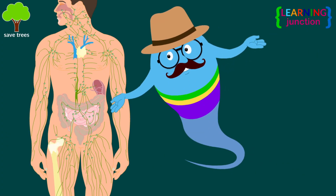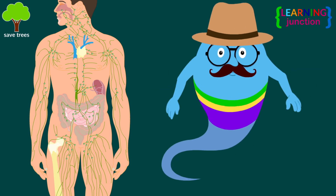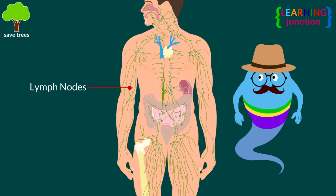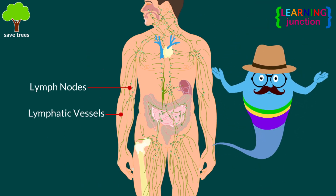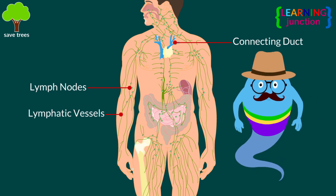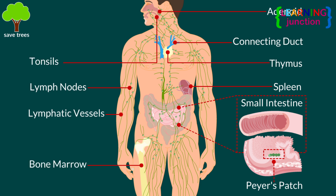Here is the full diagram of the lymphatic system. Parts are: lymph nodes, lymphatic vessels, collecting ducts, spleen, Peyer's patches, thymus, tonsils, adenoid, bone marrow, and appendix.